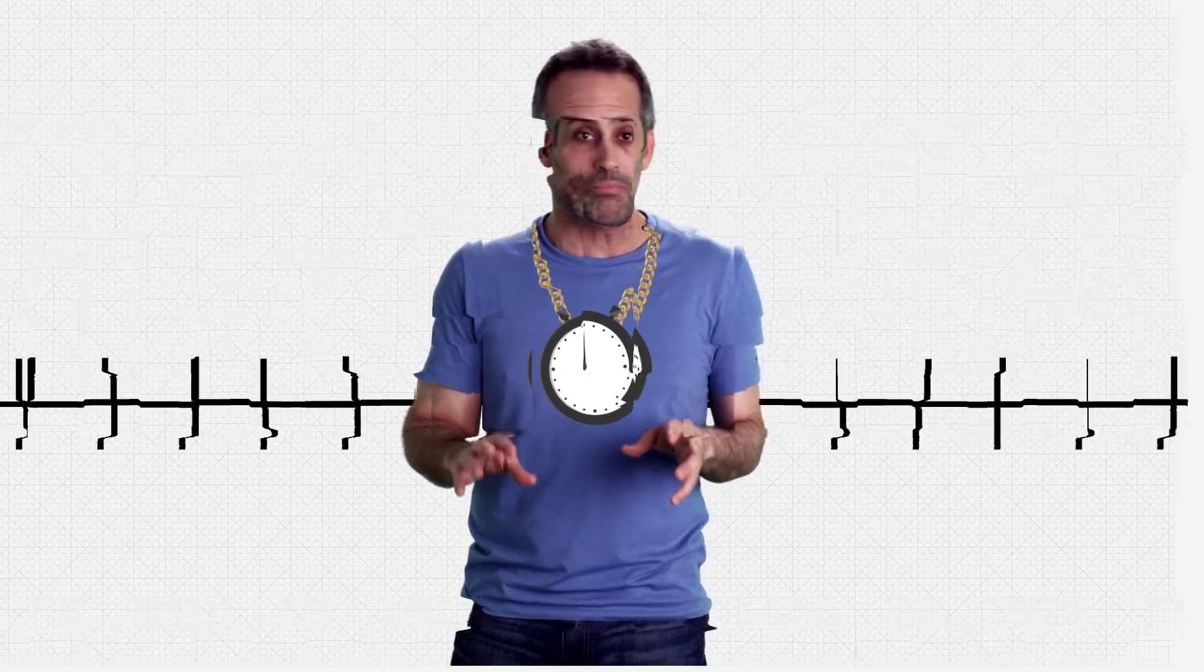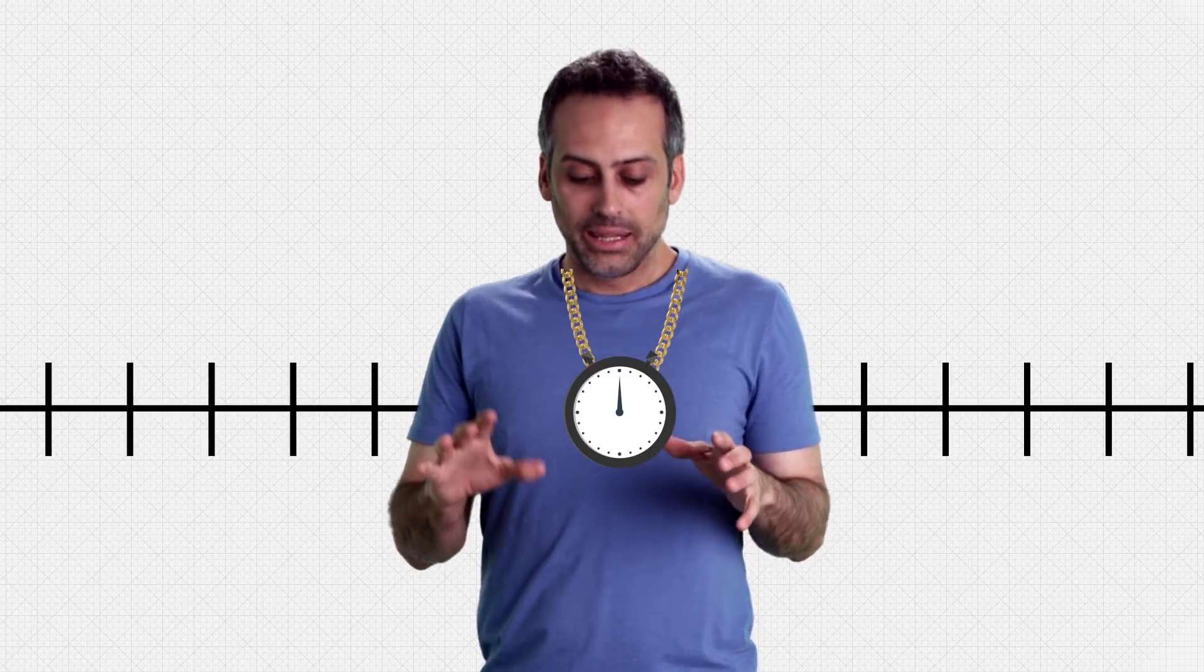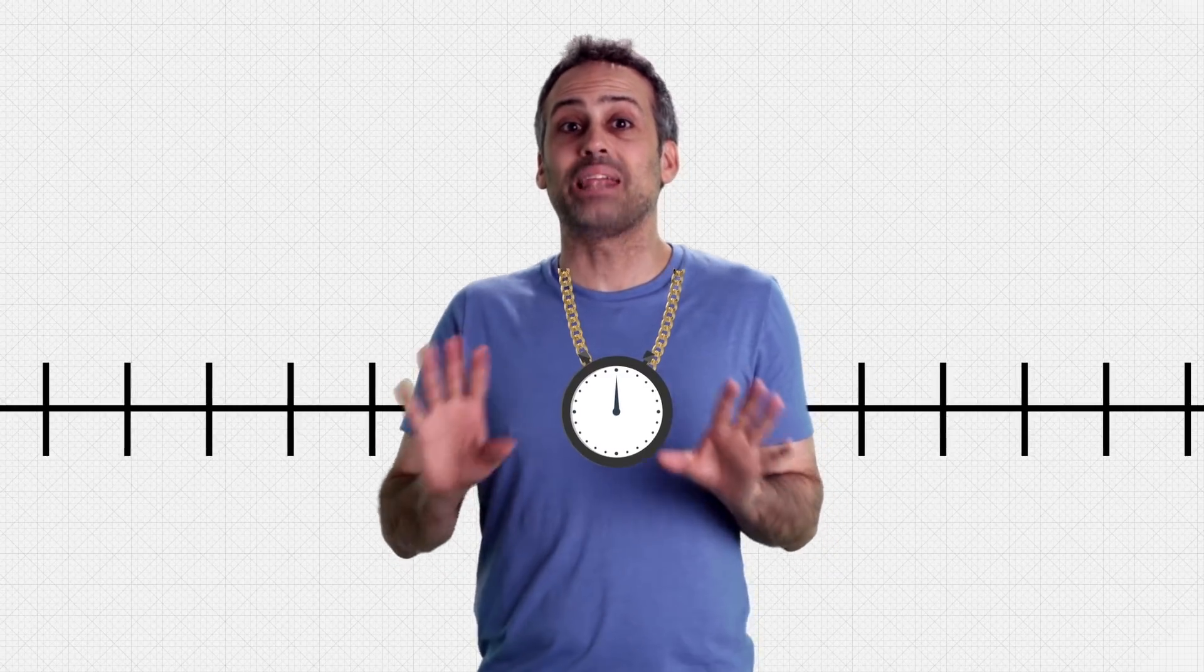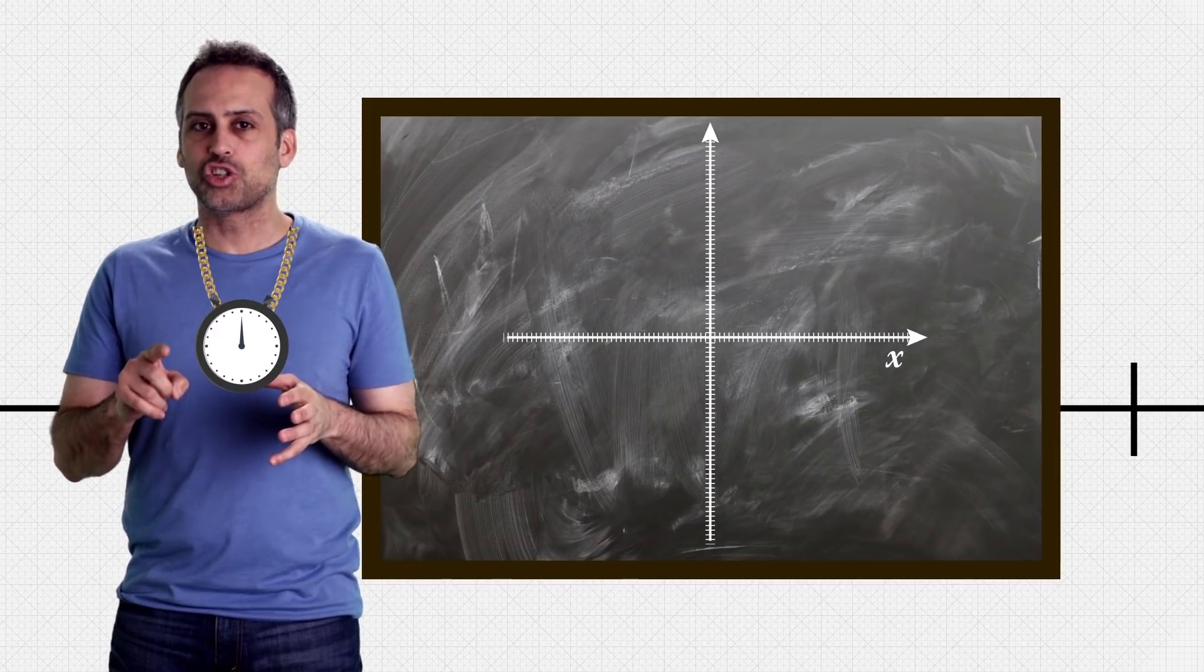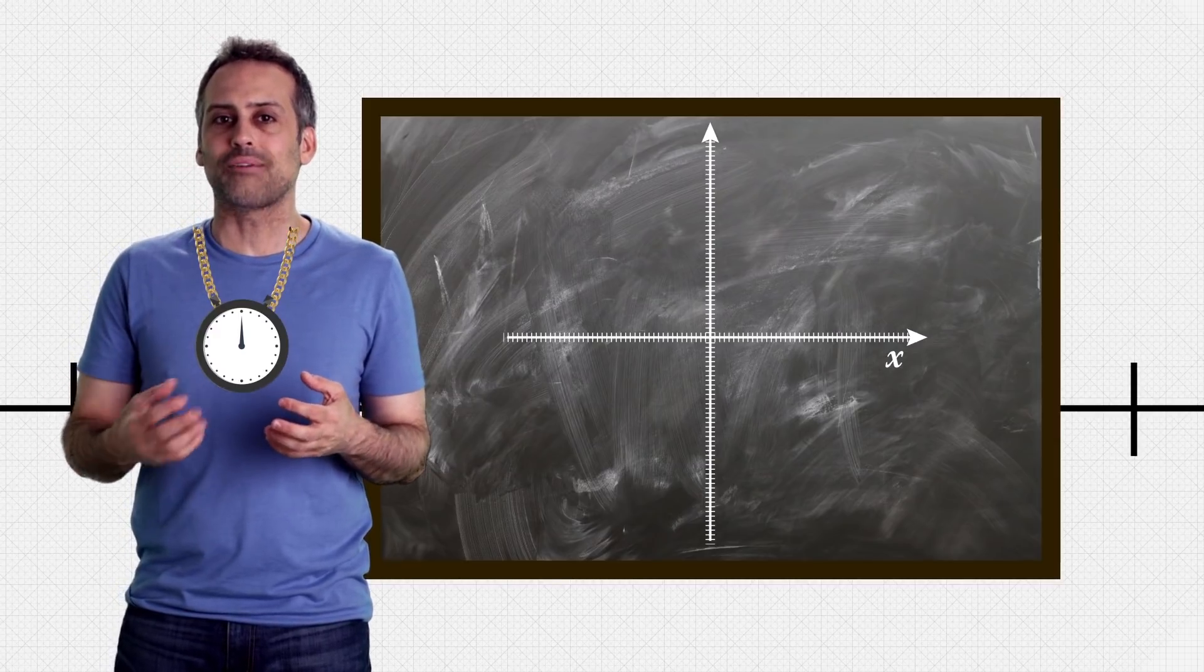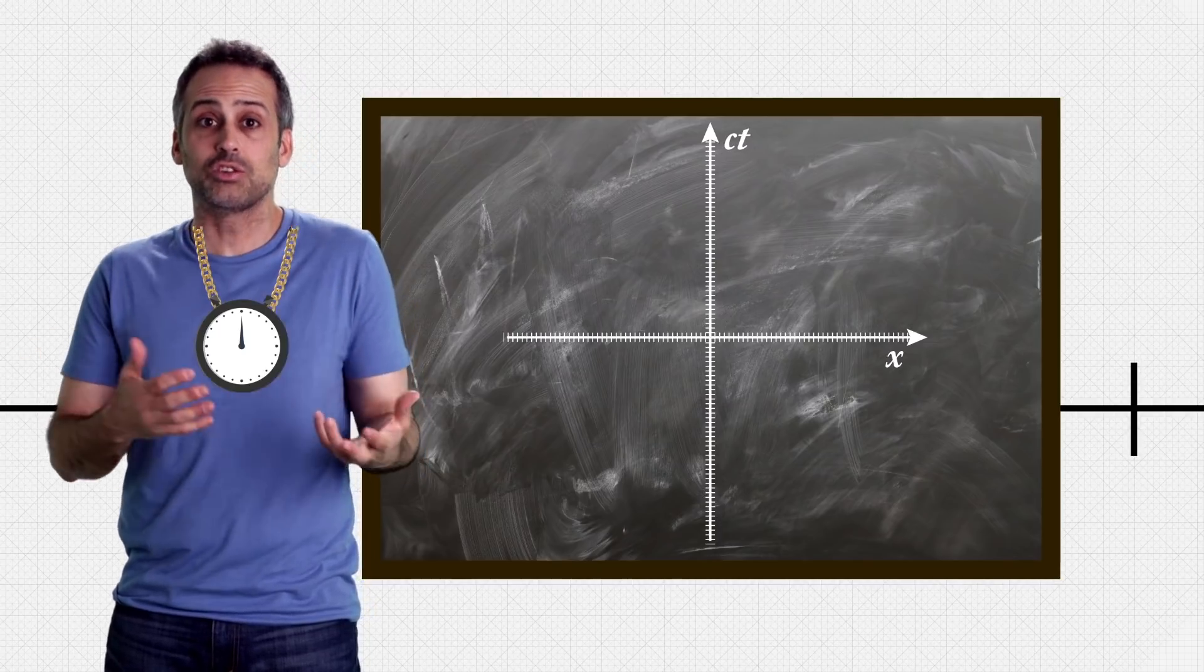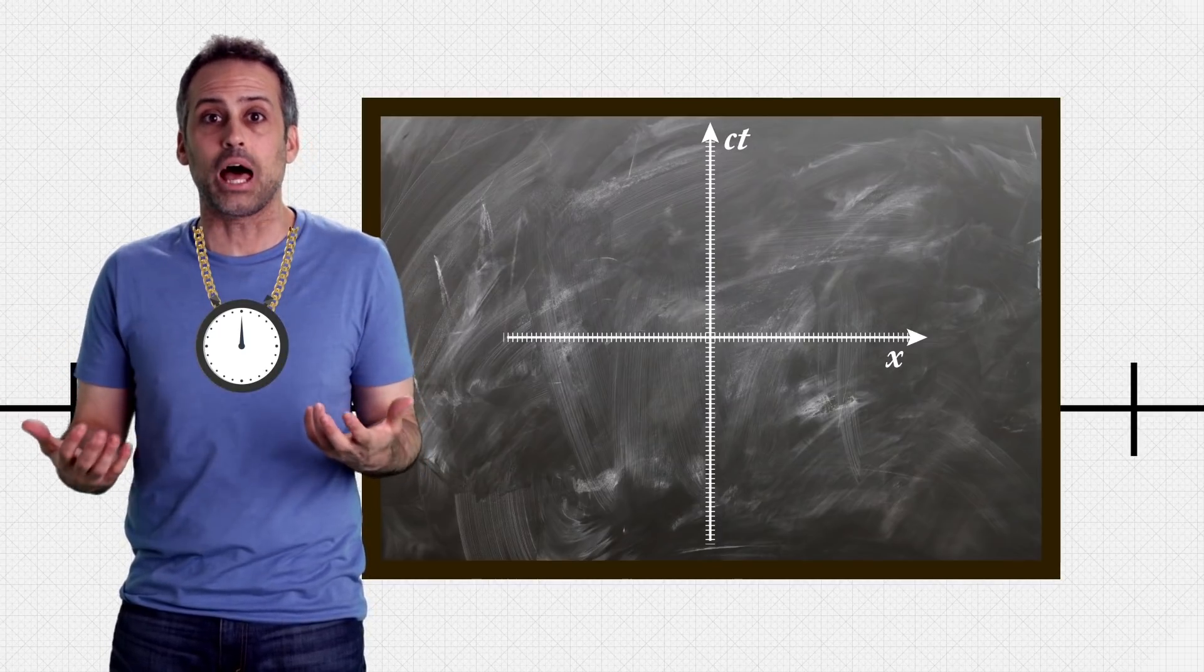The frame should also have y and z-axis, but I want to keep things visually simple. To represent this setup in a diagram, let's copy my x-axis onto a blackboard and add a vertical axis to show the time on my clock. Actually, that vertical axis is showing the distance ct that light travels per tick of my clock, which is interchangeable with clock ticks, since I know the speed of light.